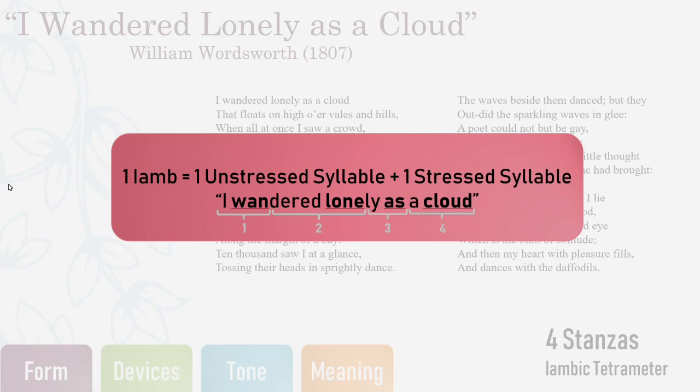Looking at the first line of the poem, 'I Wandered Lonely as a Cloud,' the bolded and underlined text shows the stressed syllables, while the plain text shows the unstressed syllables. If I were to read this exaggerating the stressed syllables, it would sound like: 'i WAN-dered LONE-ly AS a CLOUD.' It sounds a bit silly, but it shows the four iambs per line. Iambic tetrameter makes the poem sound more harmonious and pleasing to the ear.